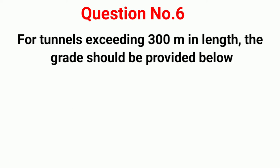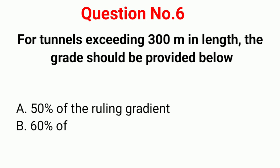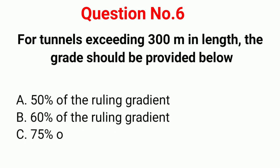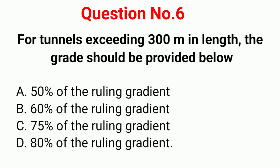Question number 6. For tunnels exceeding 300 meters in length, the grade should be provided below: Option A: 50% of ruling gradient. Option B: 60% of ruling gradient. Option C: 75% of ruling gradient. Option D: 80% of ruling gradient.